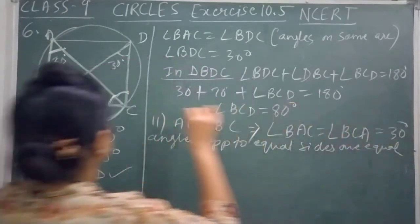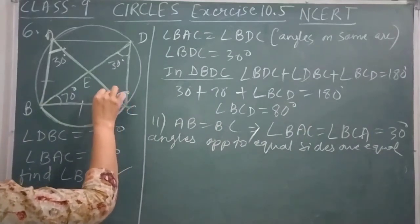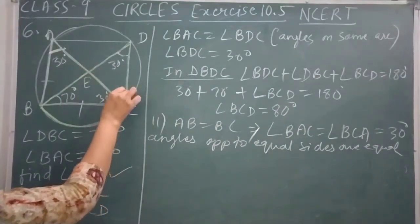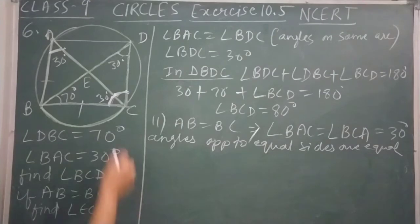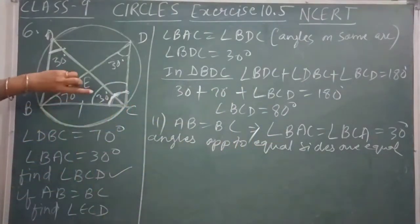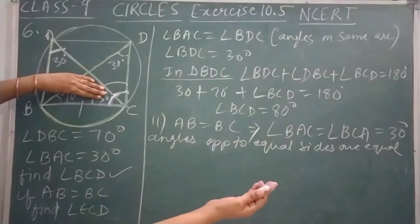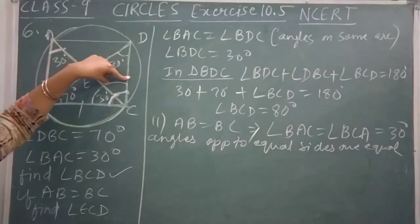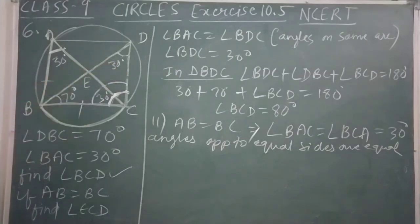We have already found angle BCD is 80 degrees. Angle BCA is 30 degrees. So angle ECD equals angle BCD minus angle BCA. What is 80 minus 30? That is 50 degrees.